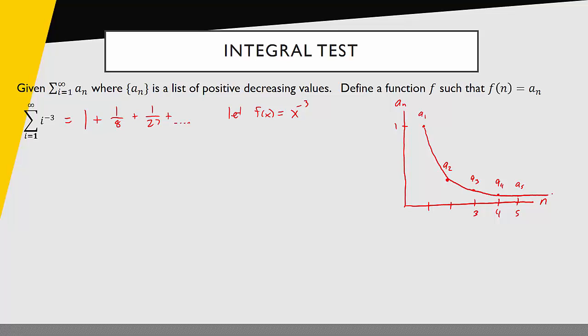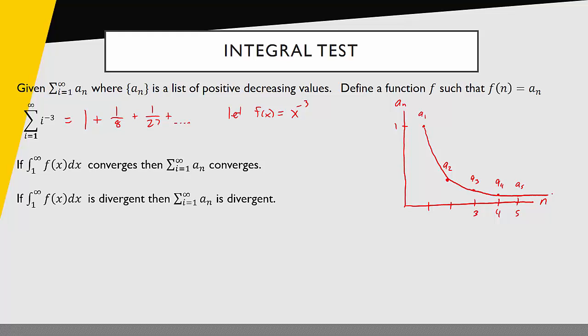The big idea of the integral test is: if we define this function and we look at the improper integral — the integral from 1 to infinity of the function — if that integral converges, then the series converges. And if that integral diverges, then the series is divergent.